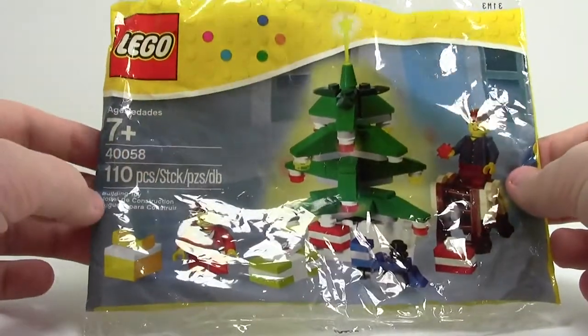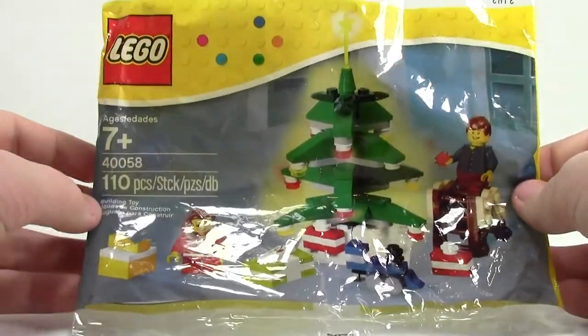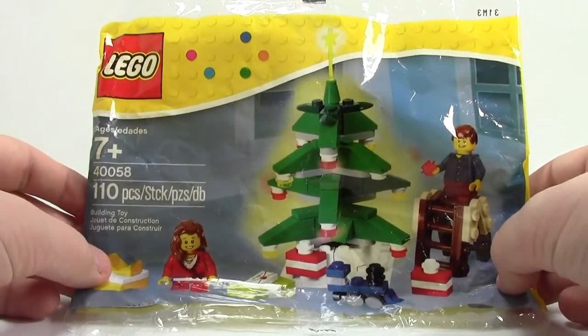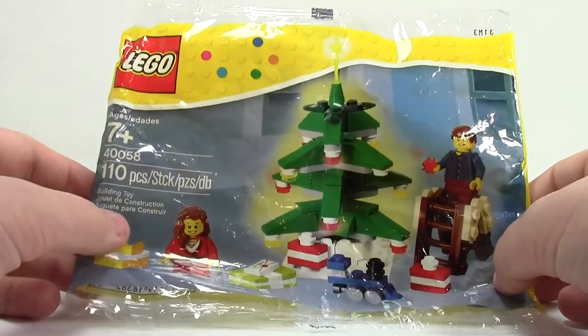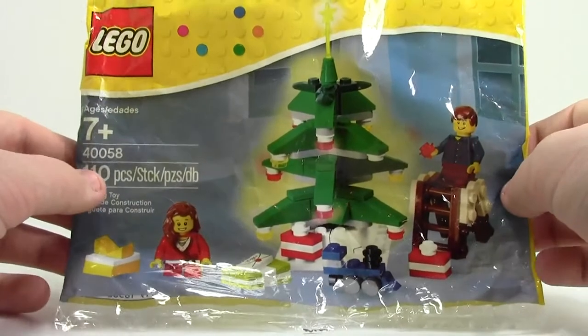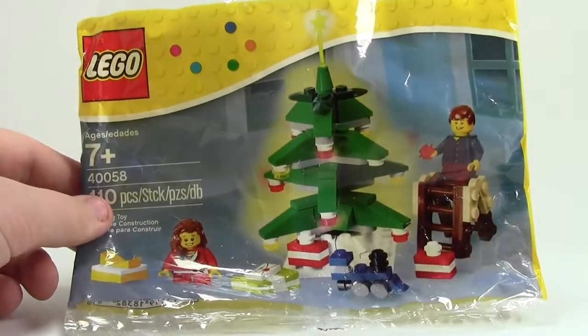Thanks a lot for watching the review of set number 40058, this poly bag with 110 pieces, two minifigures, presents, and a tree. Very cool set. Stay tuned for all my other holiday reviews, and have a Merry Christmas, everybody.